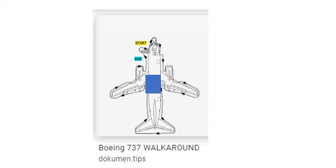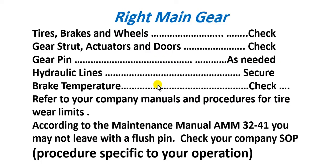The area here is the main wheel well, between the two wings, at the lower fuselage. For the right main gear, you will check: tires, brakes, wheels, gear strut, actuators, doors, gear bin, and hydraulic lines.